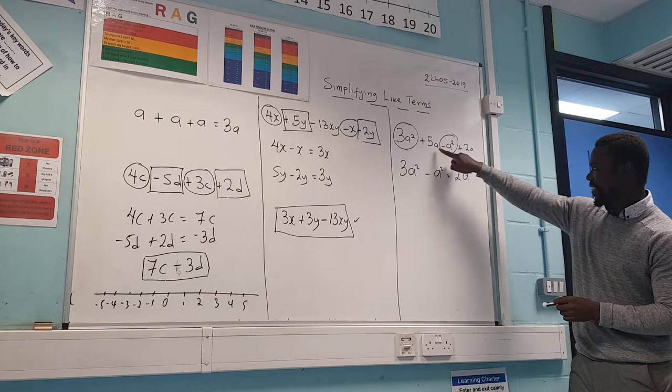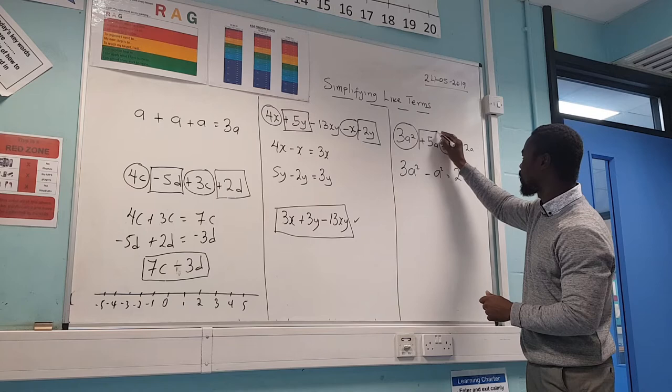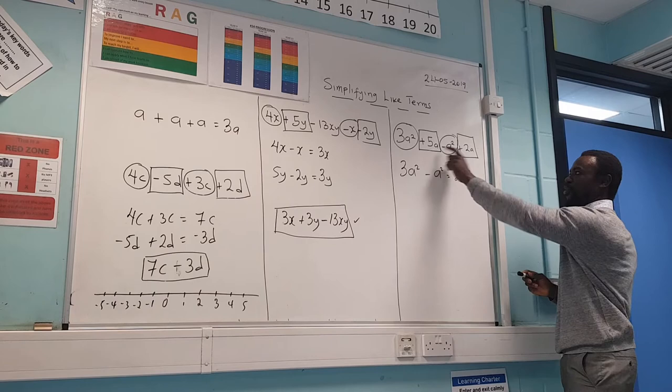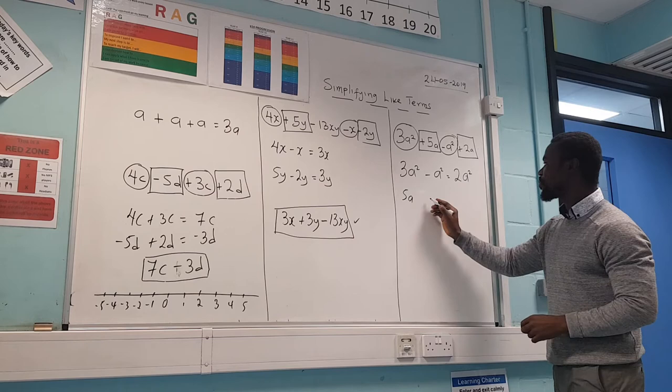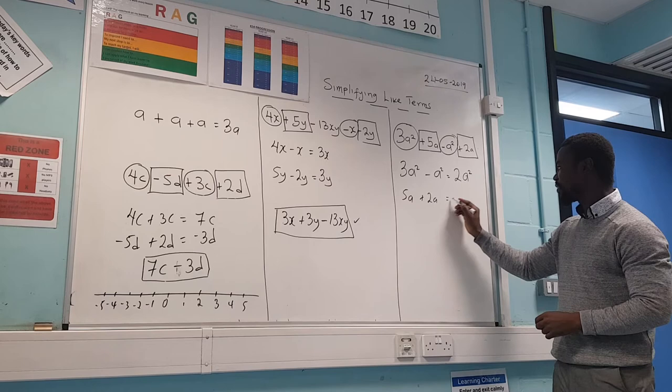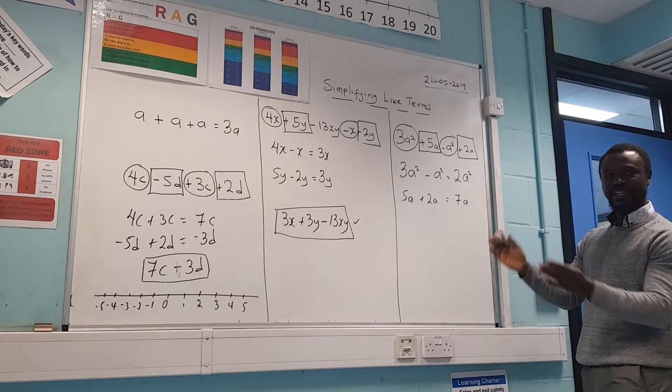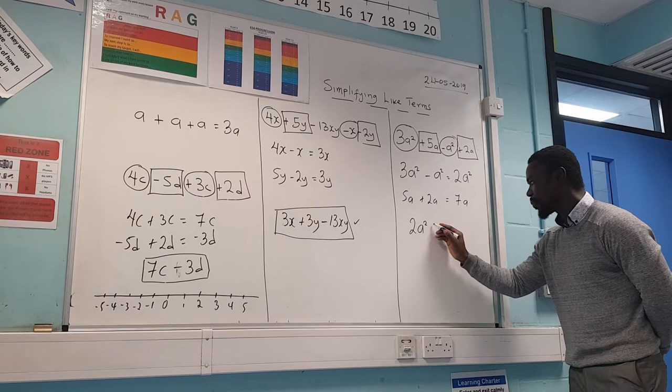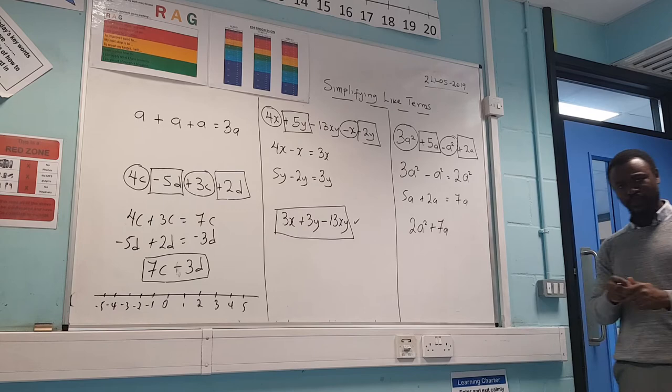Now let's look at the remaining letters — these are just A, with no power. We can work these together, so put them in a box. We have 5A plus 2A. Five plus two gives me 7A. Now combining both answers: two A squared plus 7A.